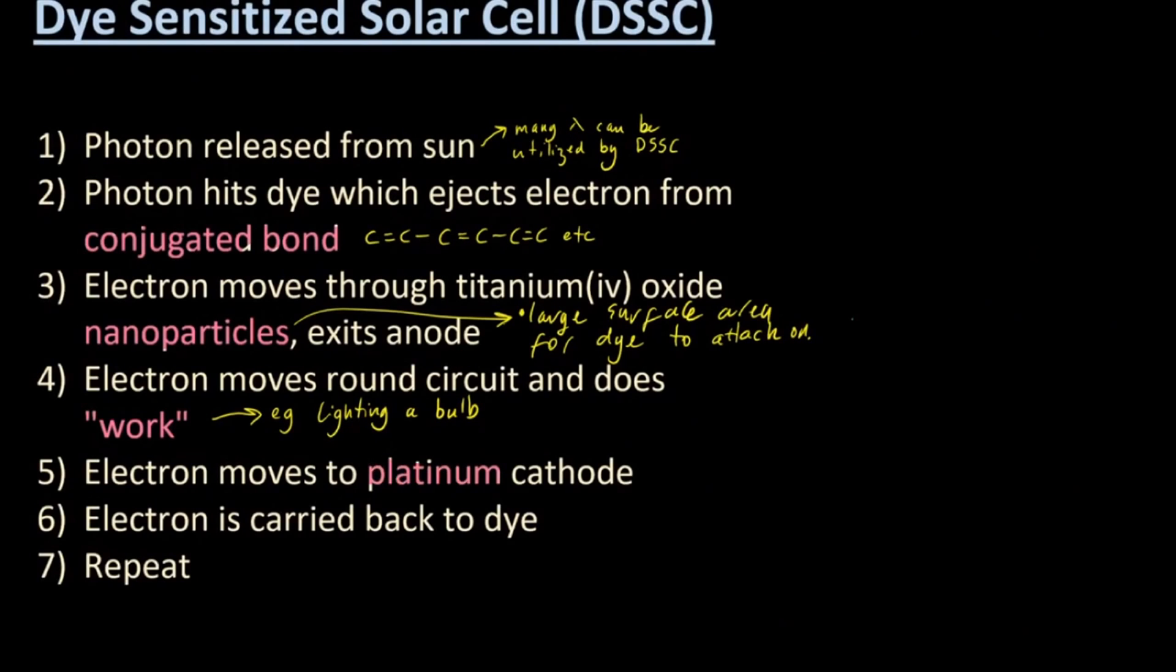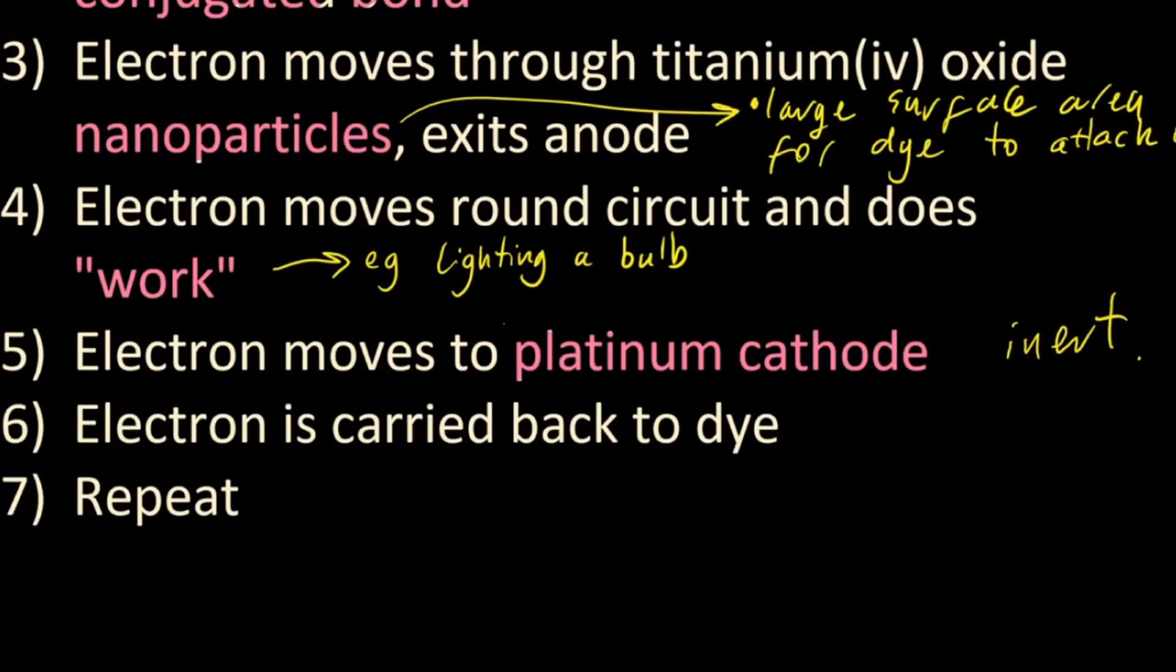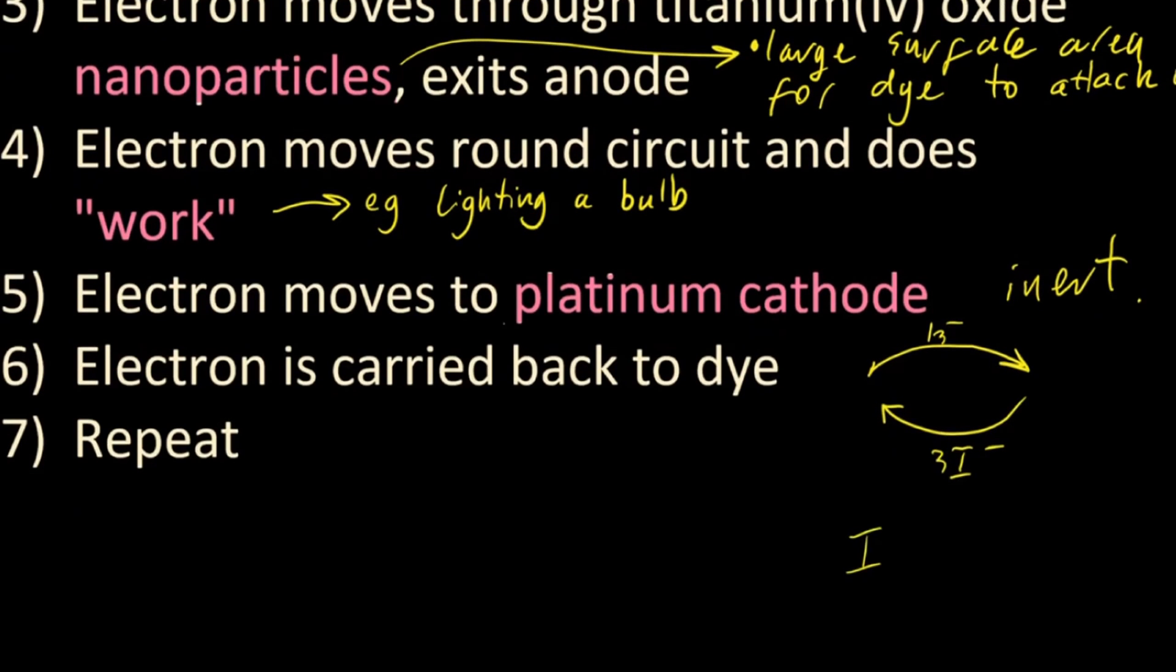The electron then moves to the platinum. Platinum's inert, receives the electron, and then the electron is carried back to the dye on this very clever kind of transportation process. The triiodide ion and the iodide ion are involved in that. No way they're going to ask you to memorize that equation, maybe ask you to balance it.